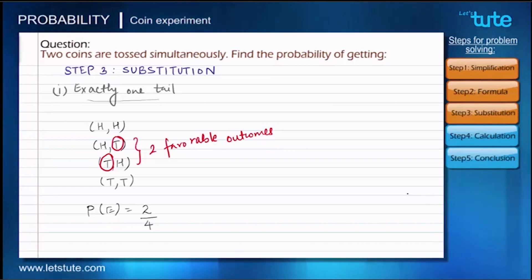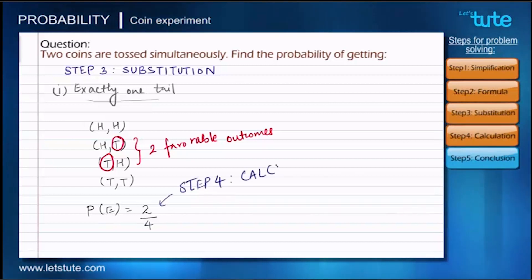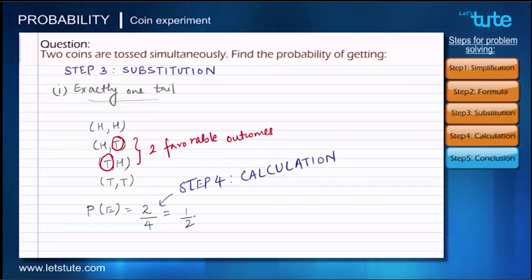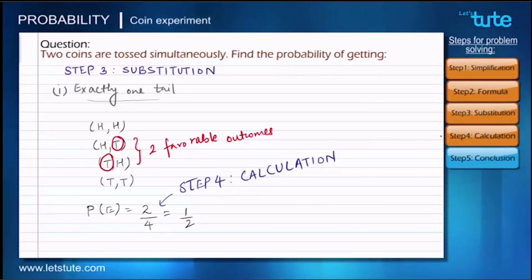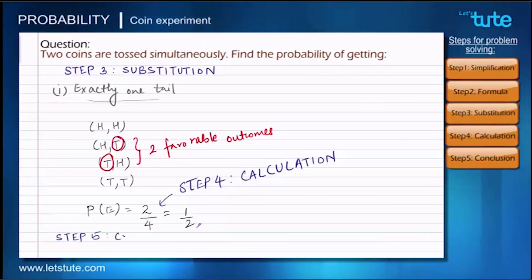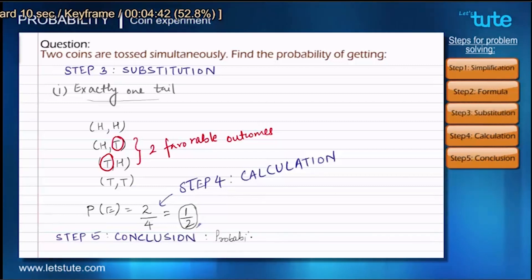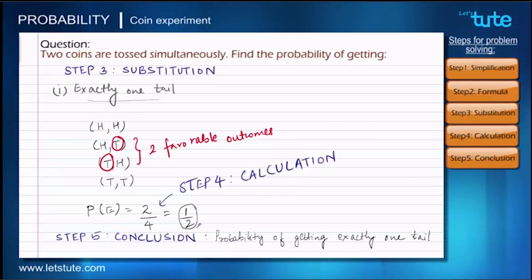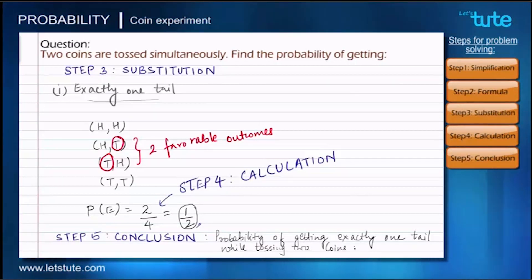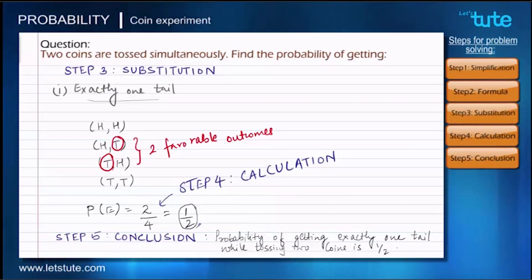Step 4 is the calculation step. Dividing numerator and denominator by 2, we get 1 upon 2. Step 5 is the conclusion: the probability of getting exactly one tail while tossing two coins is 1/2.